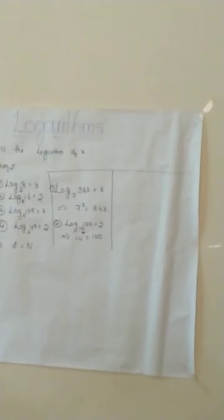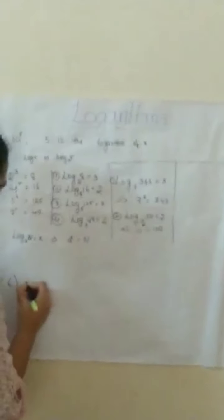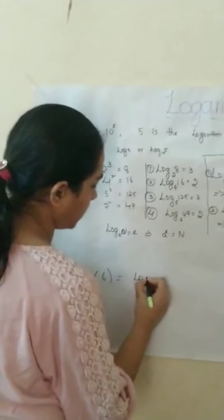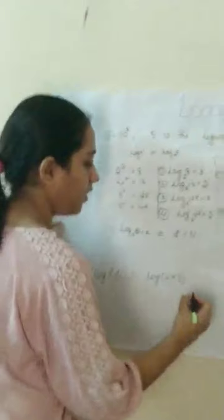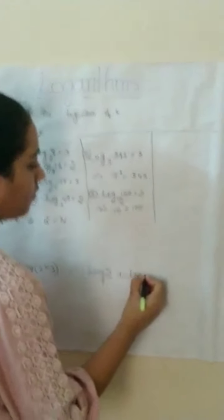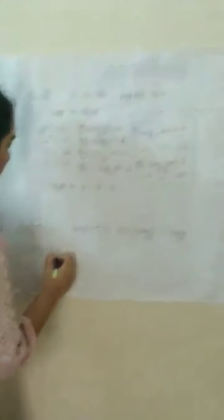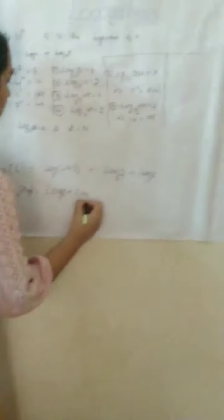Now, let's discuss about the properties of logarithms. First one: log of 6. We can write log 6 as log 2 times 3. That is equal to log 2 plus log 3. From this we can say that log of xy base a equals log x base a plus log y base a.